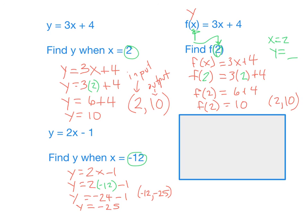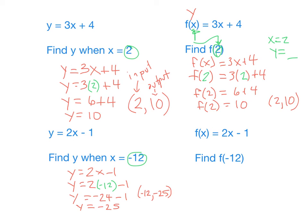So, one last example. Go ahead and try this one on your own using function notation. You'll notice it is the same as this, y equals 2x minus 1. So, f of x equals 2x minus 1. Find f of negative 12.